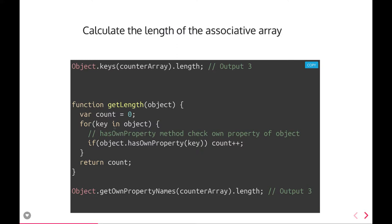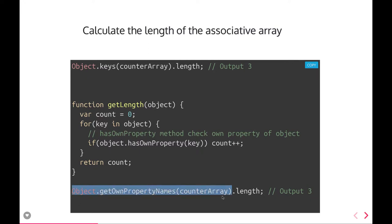Another question is how to calculate the number of properties in an object. On the object we have different methods: Object.keys and Object.entries. Using Object.keys, which gives you an array, you can do .length on that to tell you how many properties are in the object. Another way is a custom getLength function where you pass the object, initialize count to 0, iterate with for...in, check hasOwnProperty for each key, increment count, and return it. There is also Object.getOwnPropertyNames which returns an array you can call .length on.